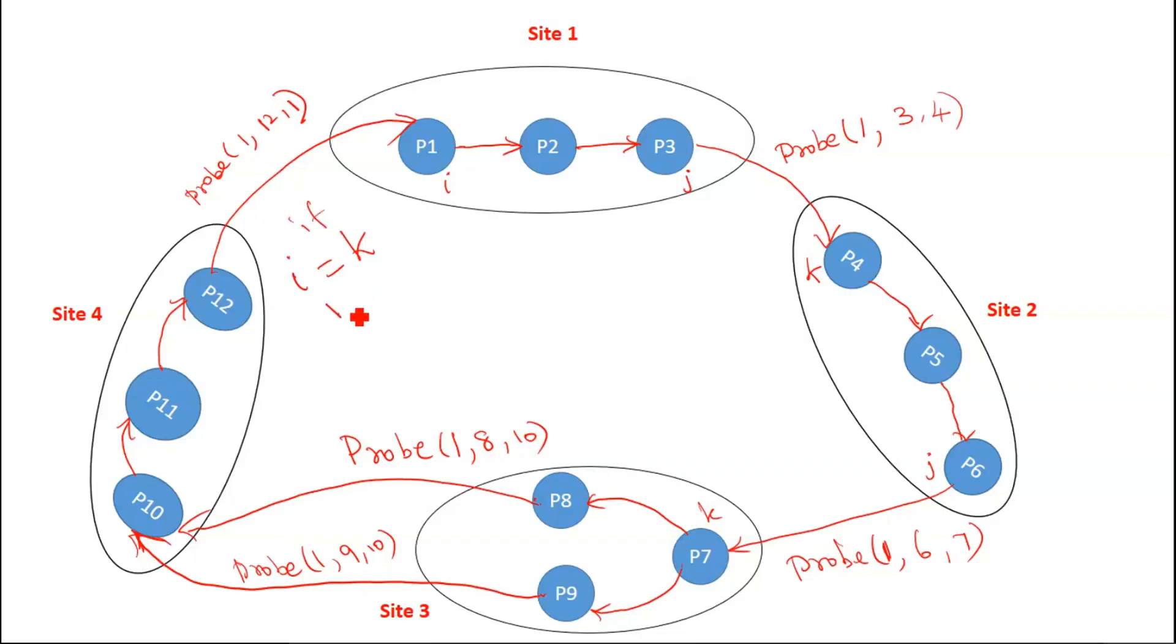Here 1, p1, i equal to p1. What is k? It is also p1. P1, p1. So there is a cycle. There is a cycle. So deadlock exists. Deadlock exists. So this is how actually edge chasing algorithm works.